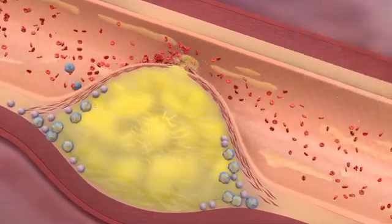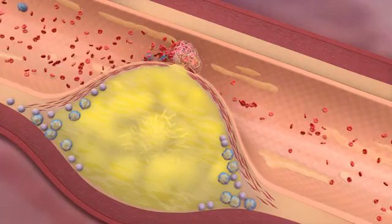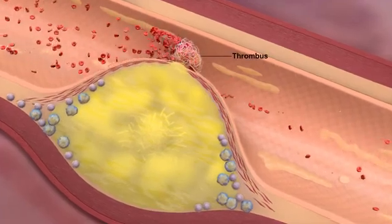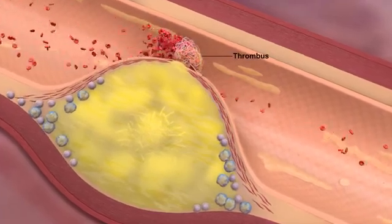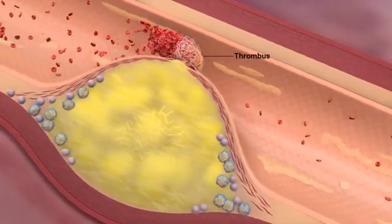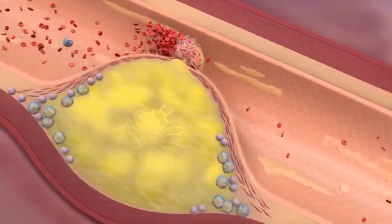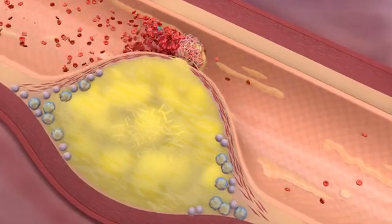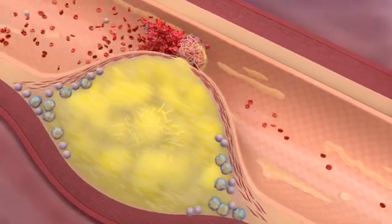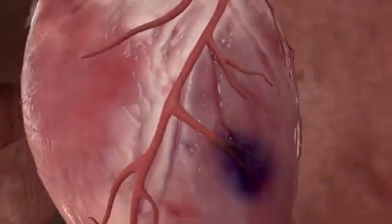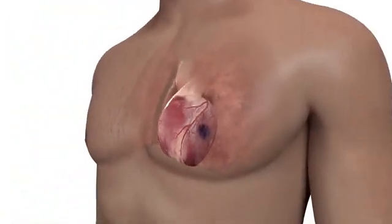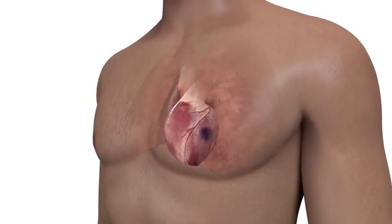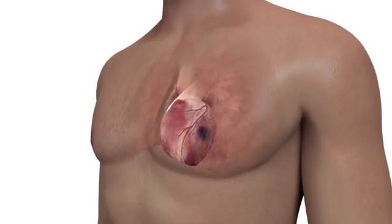Plaques with a thin or weakened fibrous cap can rupture and release thrombogenic collagen into the bloodstream. This results in rapid thrombus formation, prolonged ischemia, and subsequent necrosis of the myocardium, also known as myocardial infarction.